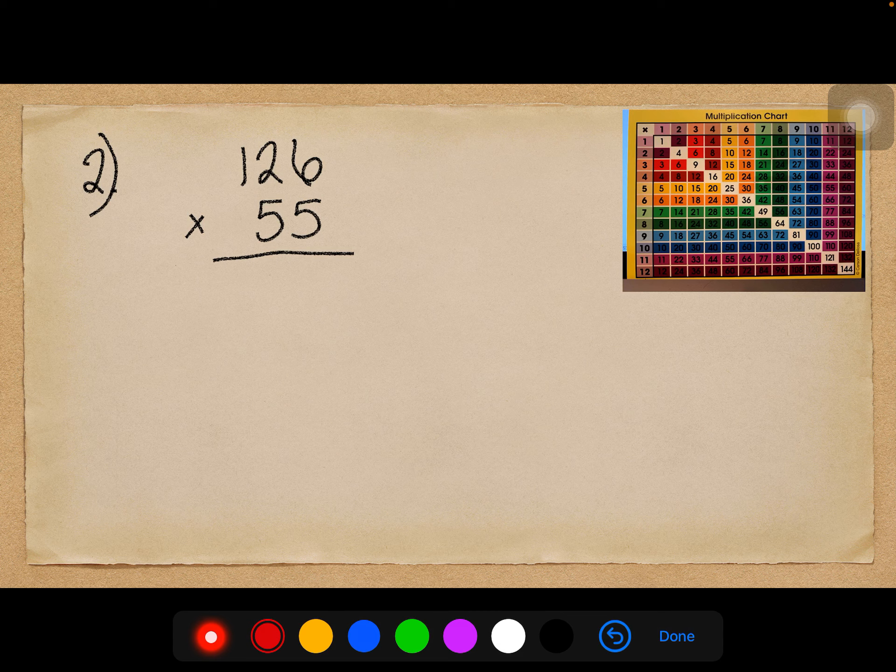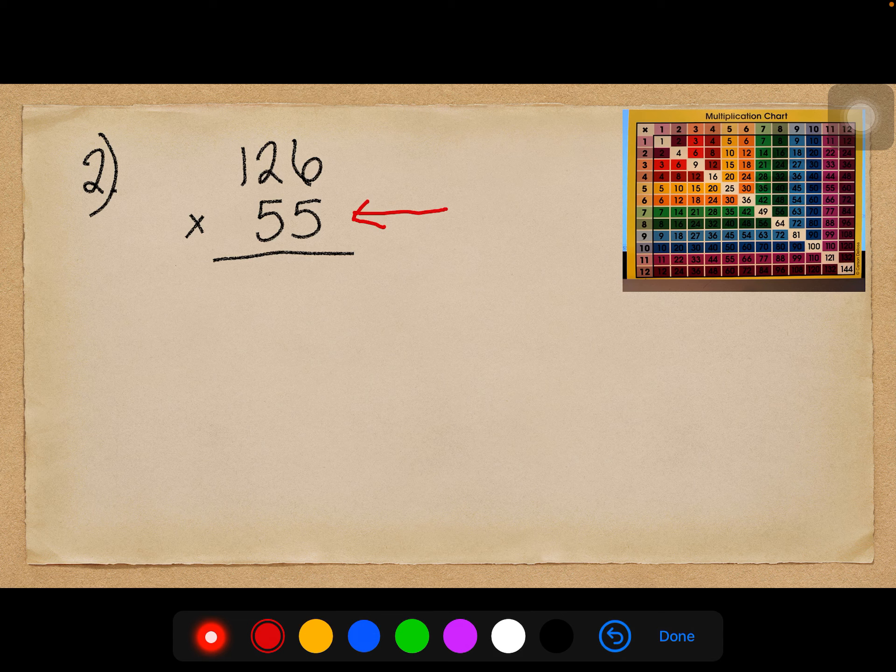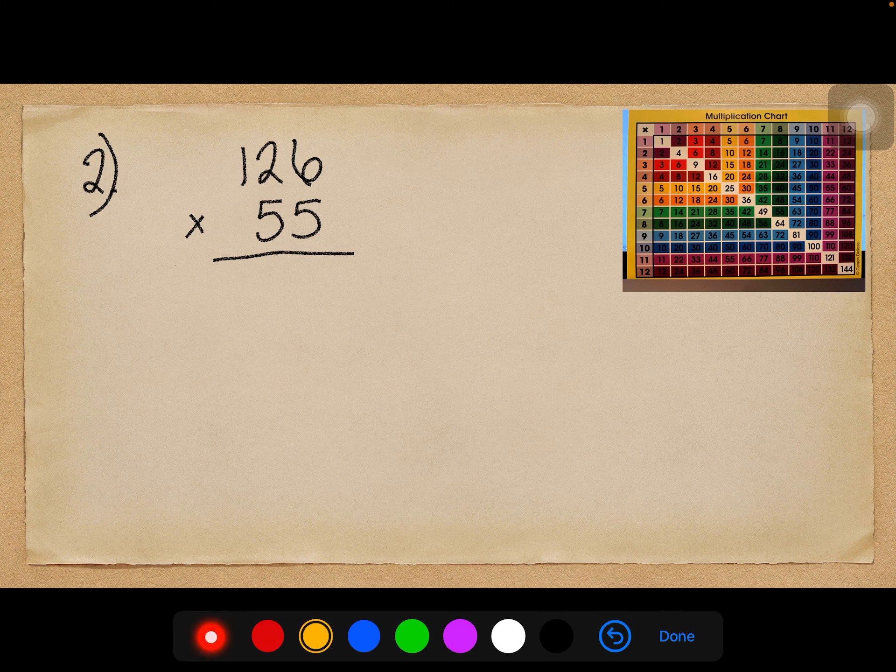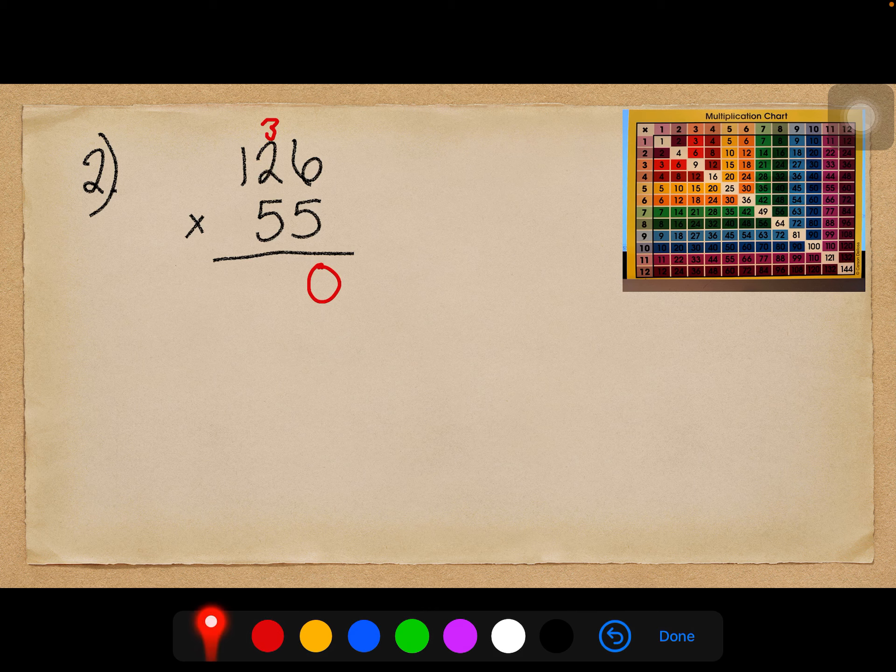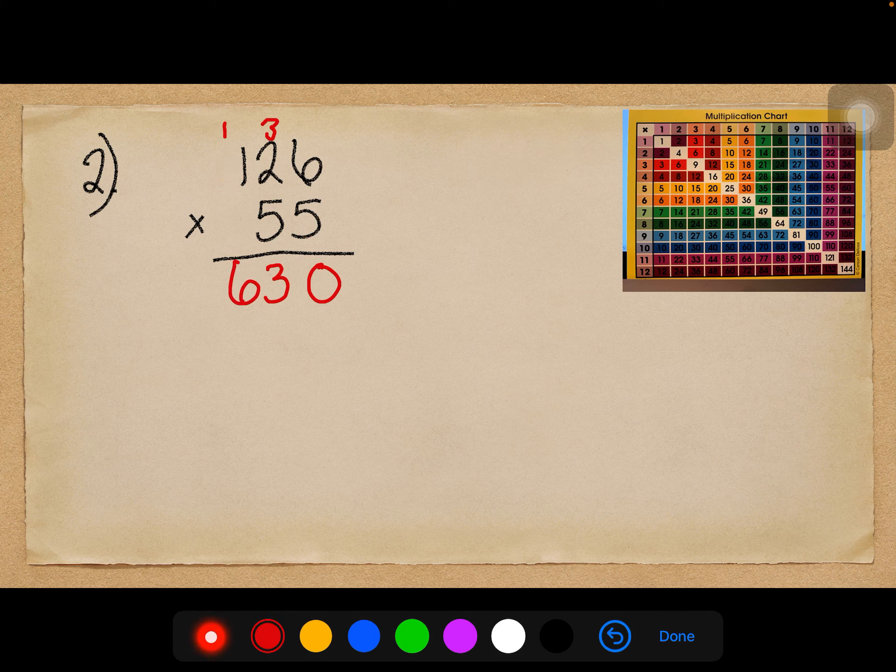Alright, let's move on to number 2. So we have a 3 digit by a 2 digit, and if you look at the digits in the multiplier, we have 2 digits in the multiplier, which tells me there's going to be 2 partial products. So if you do not have 2 partial products, you did something wrong along the way. Okay, so let's start with 6 times 5. 6 times 5 is 30, so I'm going to put my 0 down and carry my 3. And then I have 5 times 2 is 10, plus 3 is 13.